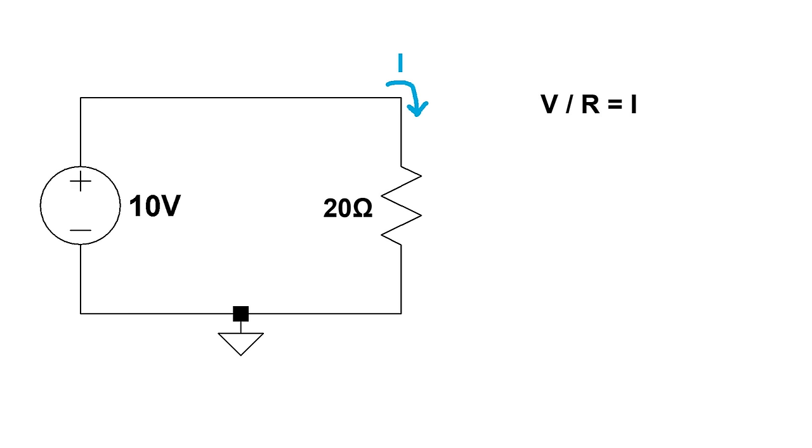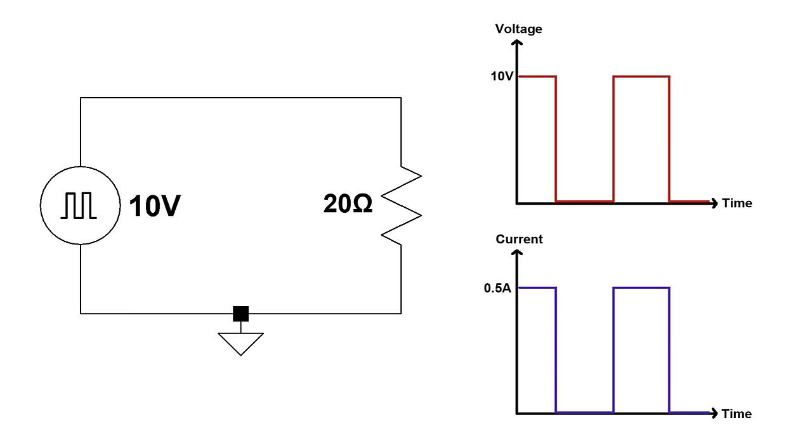Now let me give you an example. Normally when you connect a voltage source to a load resistor, the current will be given by Ohm's law. In this case, 10 volts divided by 20 ohms gives you half an amp.